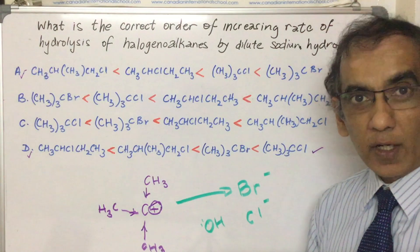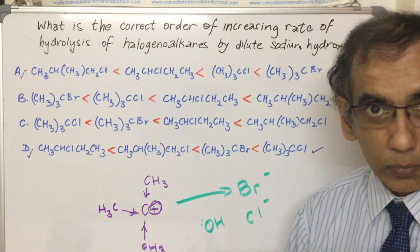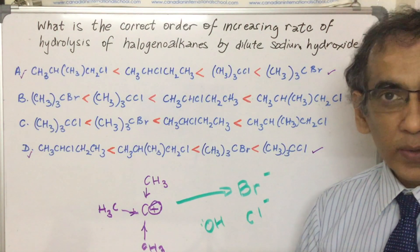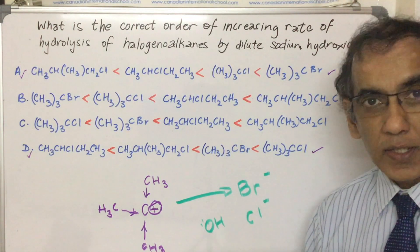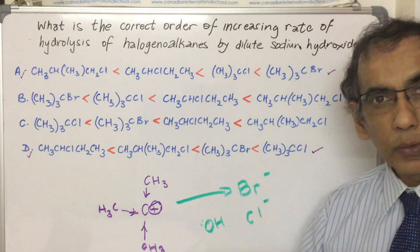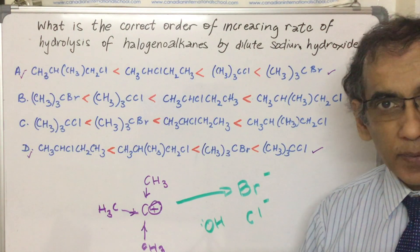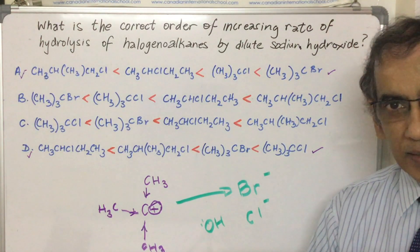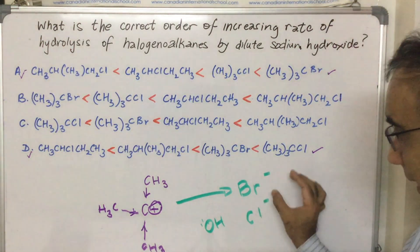One quick way to know which is the better leaving group with the halogens is that the ease with which a group leaves increases as you go down from fluorine to chlorine to bromine to iodine. The reason that this happens is because the strength of the base gets weaker as you go down and the tendency for the Br- or for the I- to be stable when it leaves increases.